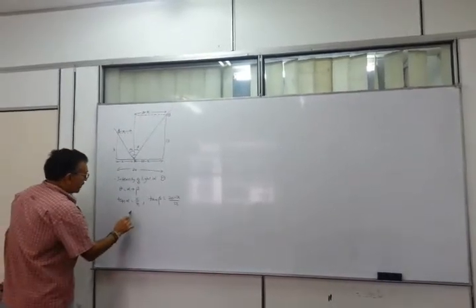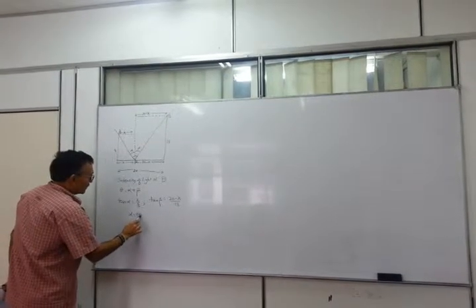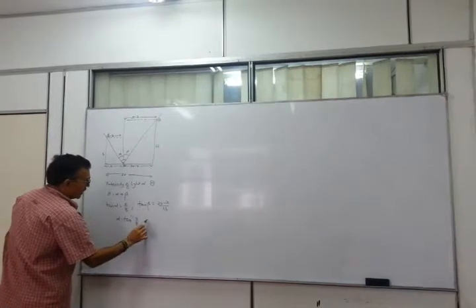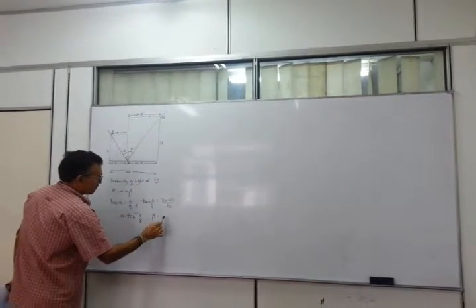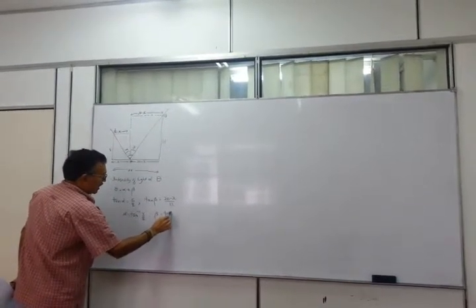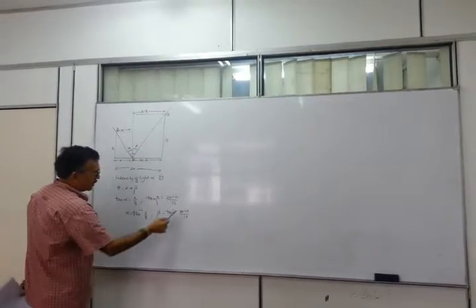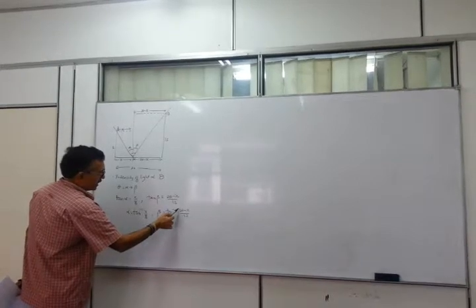So now I have alpha equals arctan x over 8, and beta equals arctan 20 minus x over 13.